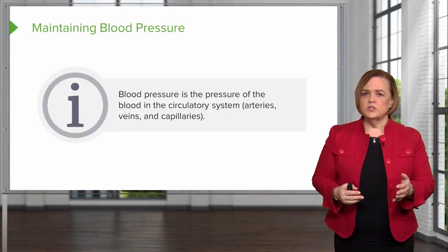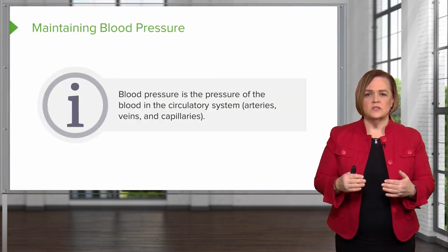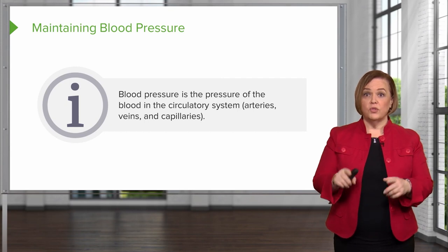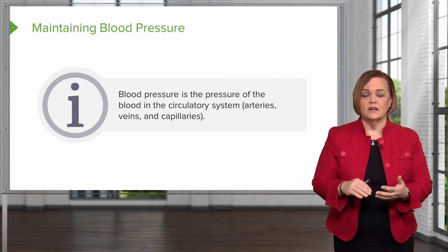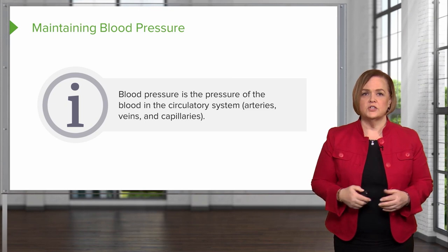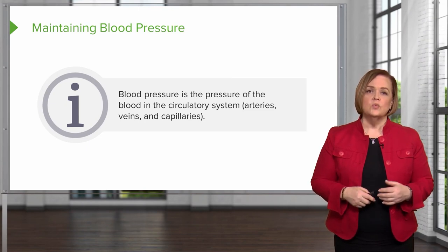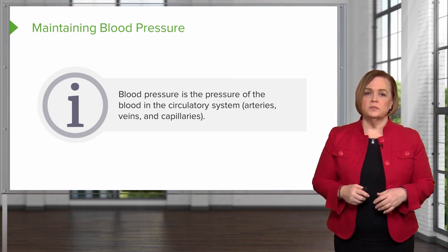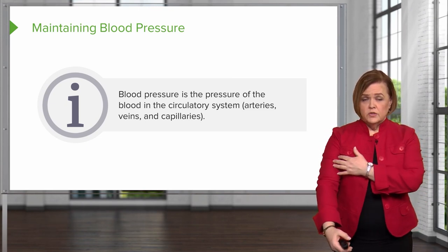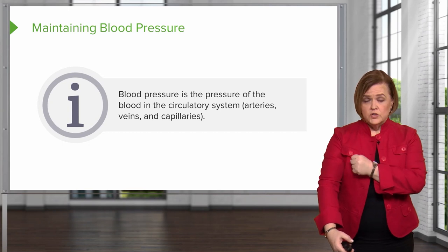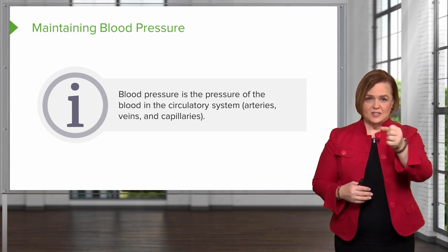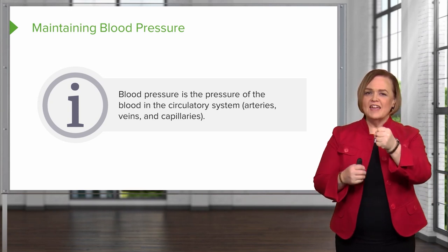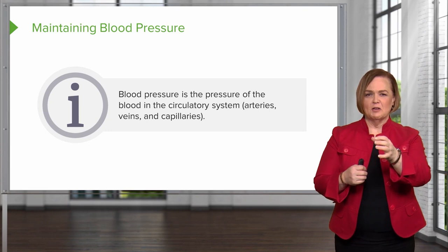Blood pressure is the pressure of the blood in the circulatory system — the arteries, the veins, and the capillaries. When you measure blood pressure using a sphygmomanometer, you're looking at the systolic pressure and the diastolic pressure. The systolic blood pressure is the number on top — the pressure the heart pushes against the vessels as blood leaves. The diastolic blood pressure is when the heart is getting its own perfusion of oxygenated blood.